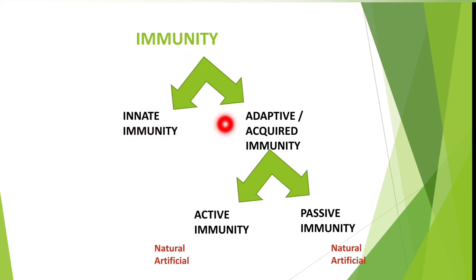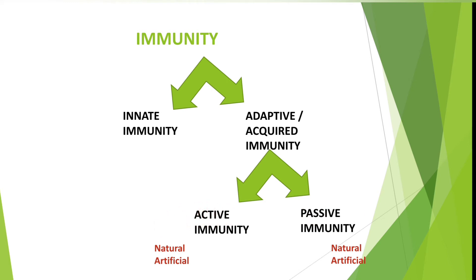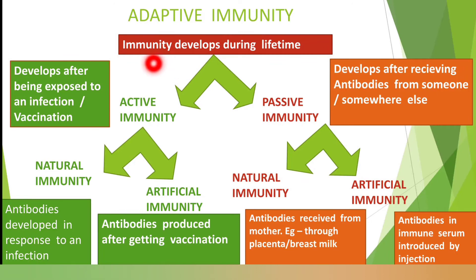As we said earlier, the two major types of immunity are innate immunity and adaptive or acquired immunity. We can again classify the adaptive or acquired immunity into active immunity and passive immunity via natural or artificial means. Adaptive immunity is the immunity that develops during lifetime, which means it comes into play after an antigenic challenge to an organism.